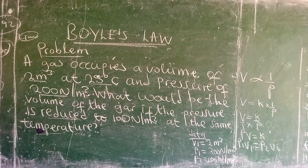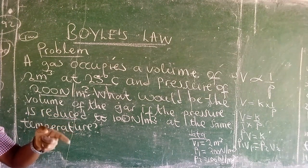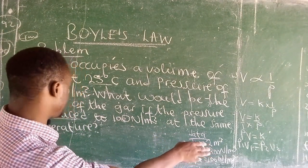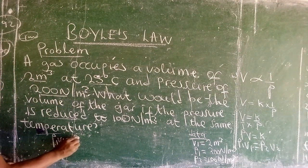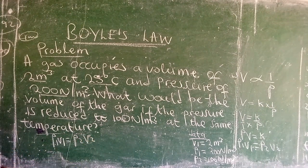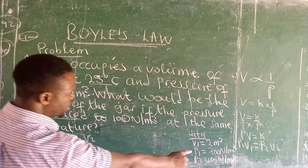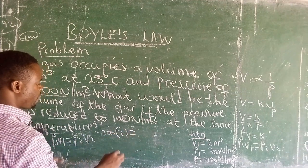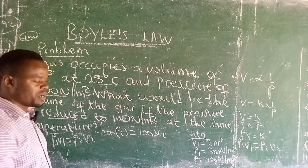What we want to resolve here is volume two. If the pressure is reduced, we expect volume to increase. The formula we are going to use is p1v1 is equal to p2v2. We simply plug in the values: pressure one is 200, volume one is 2, pressure two is 100, and volume two is unknown.